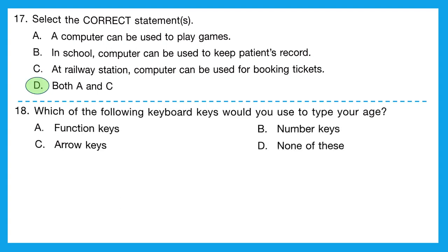Question 18: which of the following keyboard keys would you use to type your age? If typing age in digits, we use number keys; if in words, we use alphabet keys. The options are function keys, number keys, arrow keys, or none of these. The answer is B, number keys.